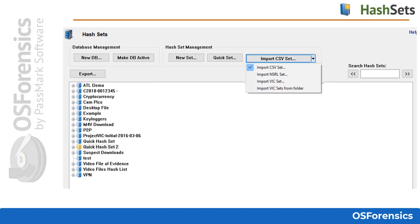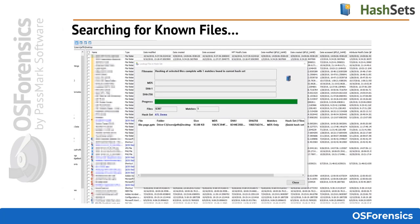The Make Database Active button makes the currently selected database active. The active database is used for all operations in OS Forensics requiring hash sets. You can also make a database active via right-click and selecting Make Active. The currently active database will be highlighted in gold. In either the file name search, the file system browser, or the mismatch search, it is possible to do a lookup on files to see if they exist within the active hash database by check-marking files, then right-clicking and choosing Look Up in Hash Set.